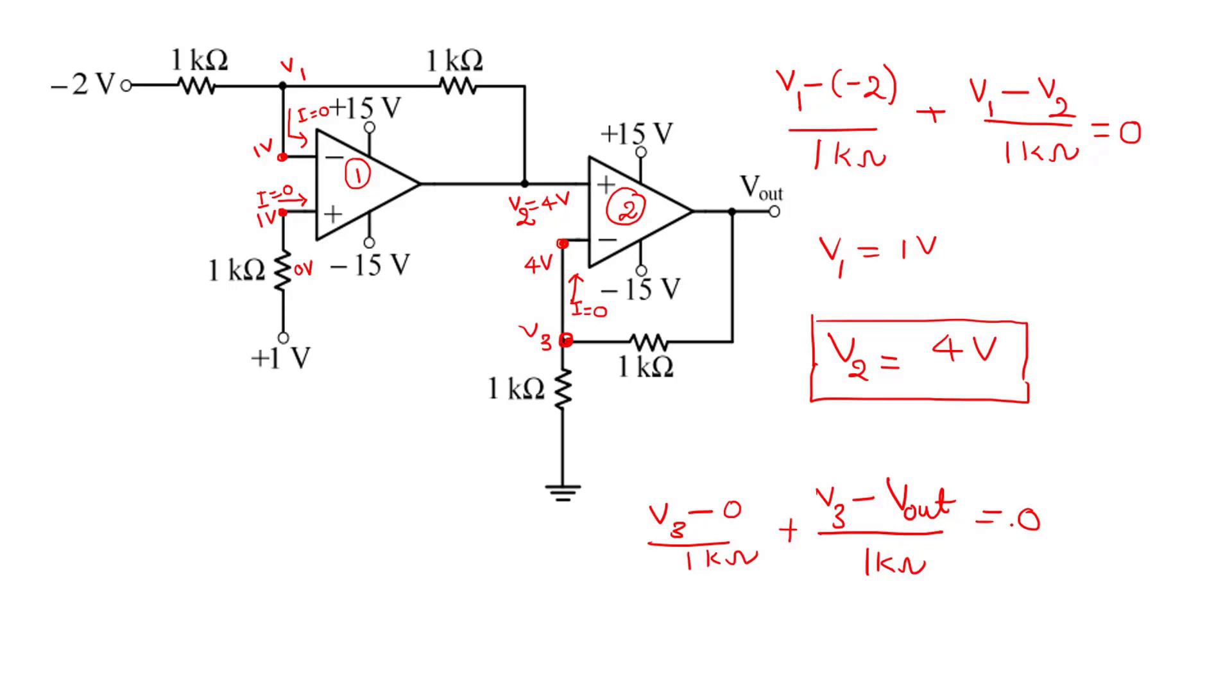Vout equals 2 times V3. We know that V3 equals 4 volts, so 2 times 4 volts equals 8 volts.